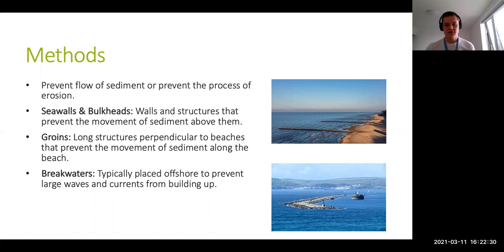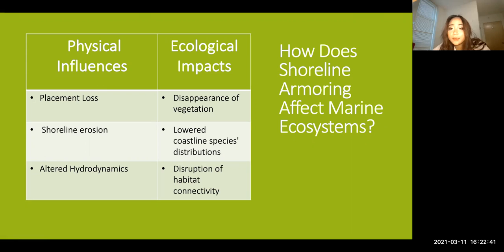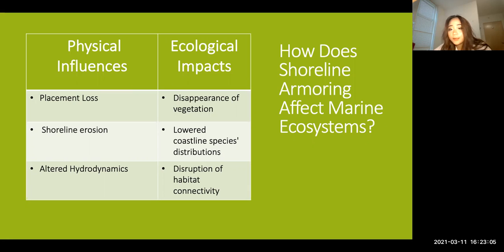Although shoreline armoring protects seaside communities, the construction of protective structures on beaches interrupts the dynamic nature of intertidal ecosystems, leading to adverse ecological effects. The physical effects can alter the environment in several ways. One example is placement loss — the footprint of armoring structures causing direct loss of shoreline habitat, especially in high energy environments where bigger dimensions are needed for stability. Secondly, deflection of wave energy causes beach erosion, decreasing the size of intertidal habitats. Shoreline armoring also shifts soft sediment dynamics and alters water flow.